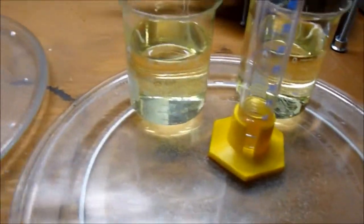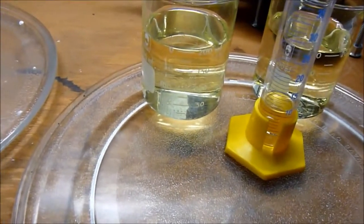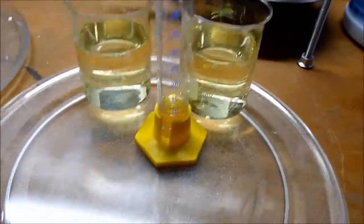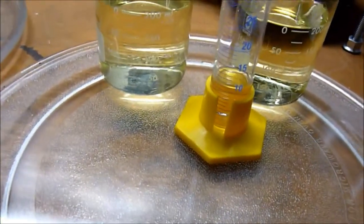Here are the reactants. We have 6.15% sodium hypochlorite solution, 400 milliliters of it in two beakers, and in the middle here we have just over 10 milliliters of acetone.